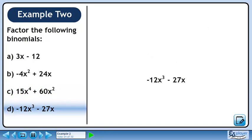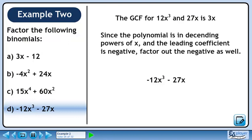In part d, we'll factor minus 12x cubed minus 27x. The greatest common factor for 12x cubed and 27x is 3x. Since the polynomial is in descending powers of x and the leading coefficient is negative, factor out a negative as well.